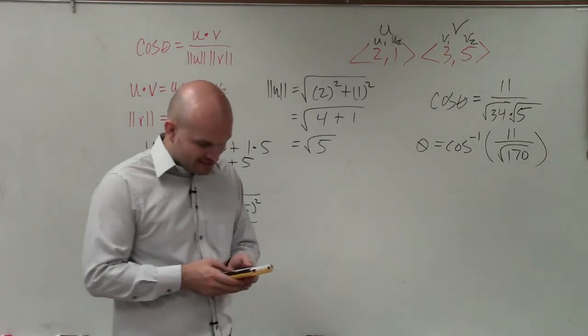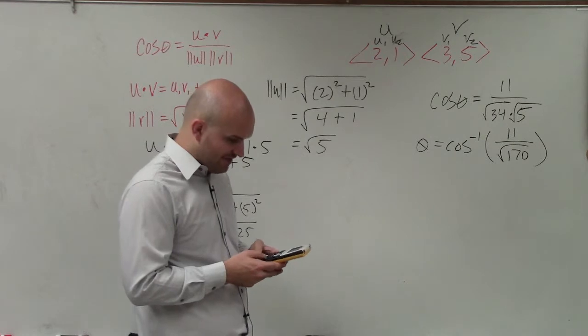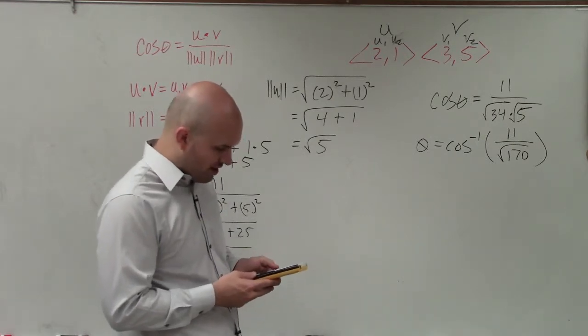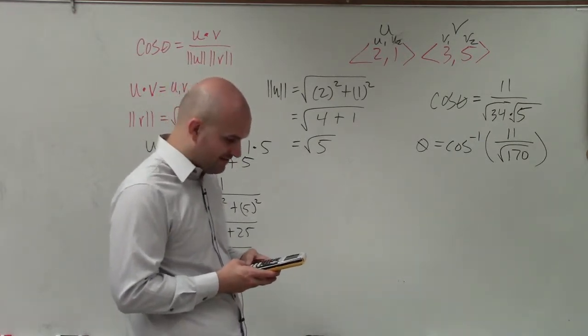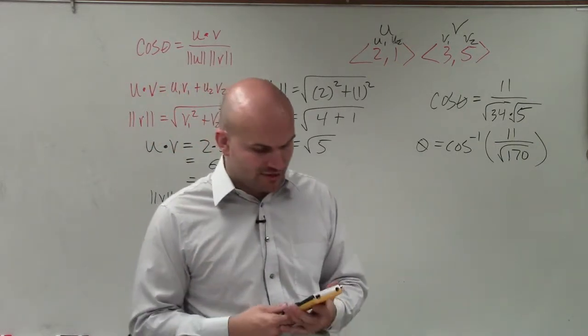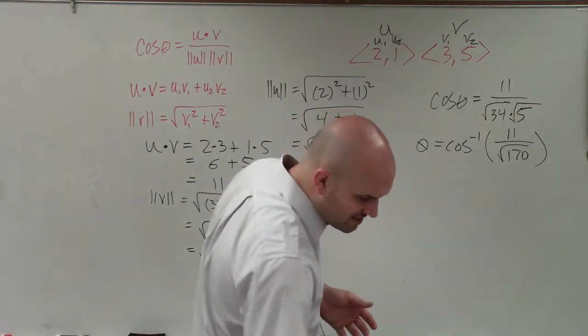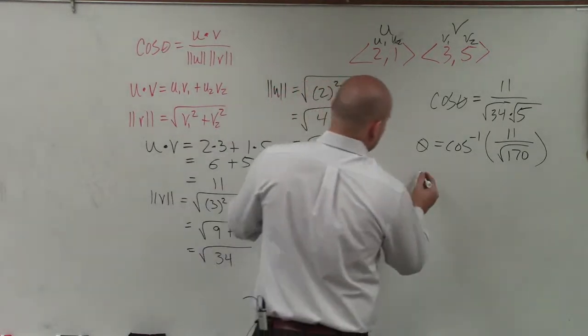And now all I'm going to do is set cosine inverse of 11 divided by the square root of 170. I don't want to try to approximate. I want to put in the exact answer into my calculator. And then I hit Enter, and I have 32.47. I'm going to round to the tenth.